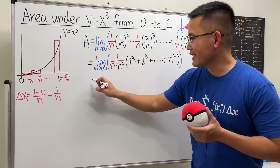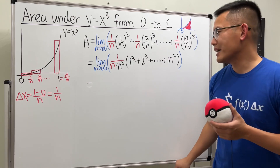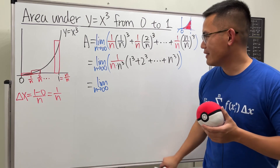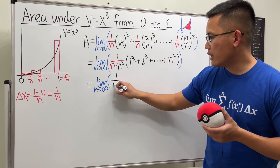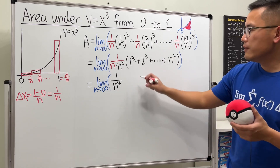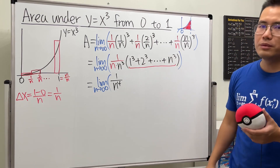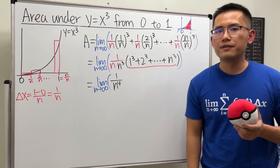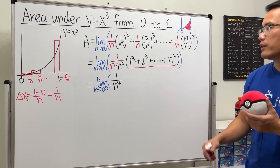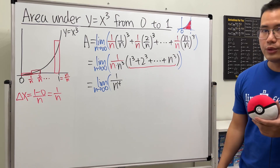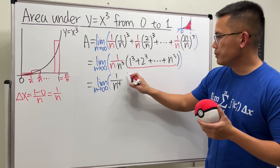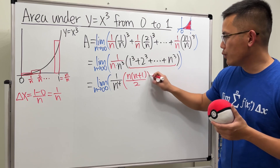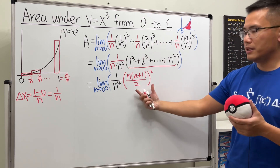Multiplying those factors together gives us limit as n→∞ of (1/n⁴) times the sum (1³ + 2³ + 3³ + ... + n³). There's a very nice formula for the sum of the first n cubes: it equals [n(n+1)/2]². So the entire sum expression becomes (1/n⁴) · [n(n+1)/2]².